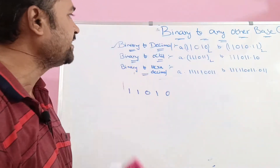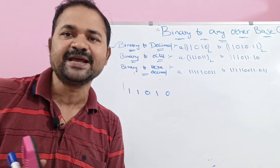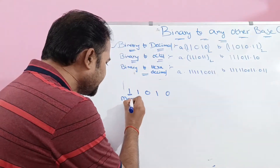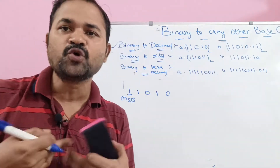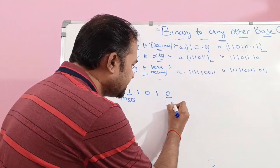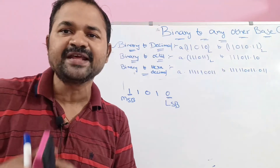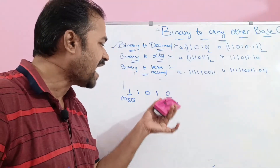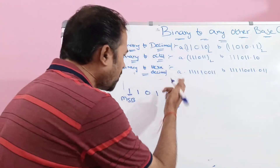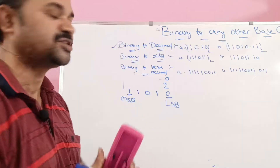The binary number is 11010. We have to convert this to decimal. The leftmost bit is called MSB — most significant bit — and the rightmost bit is called the least significant bit (LSB). To convert binary to decimal, we start from the least significant bit and write 2 power 0 on top of it.